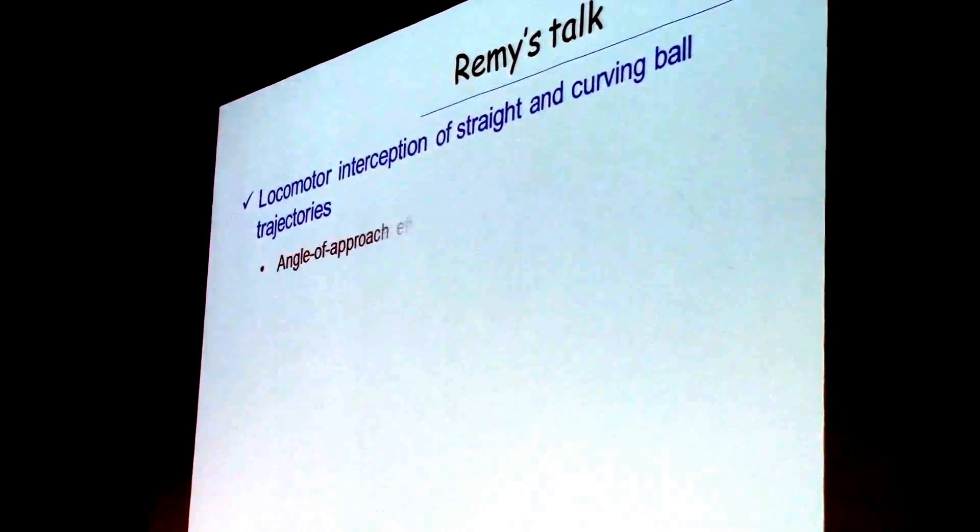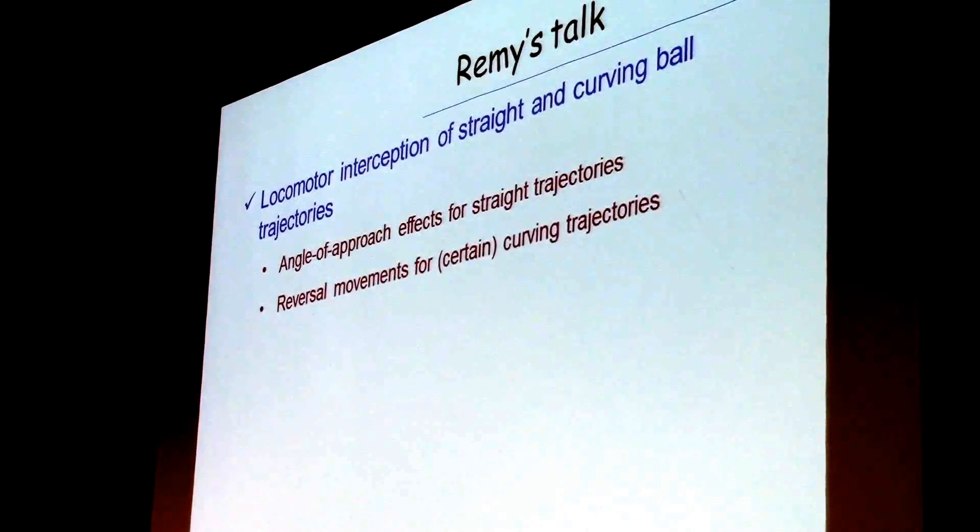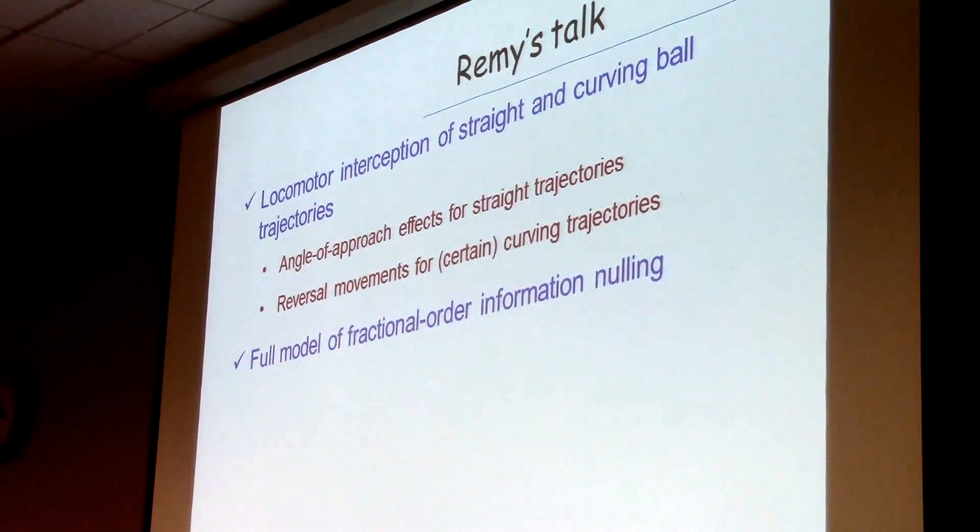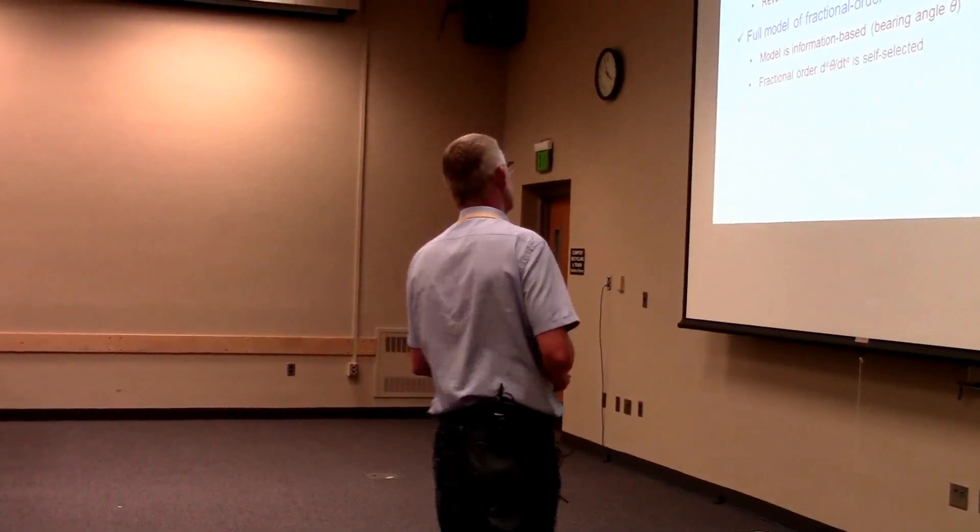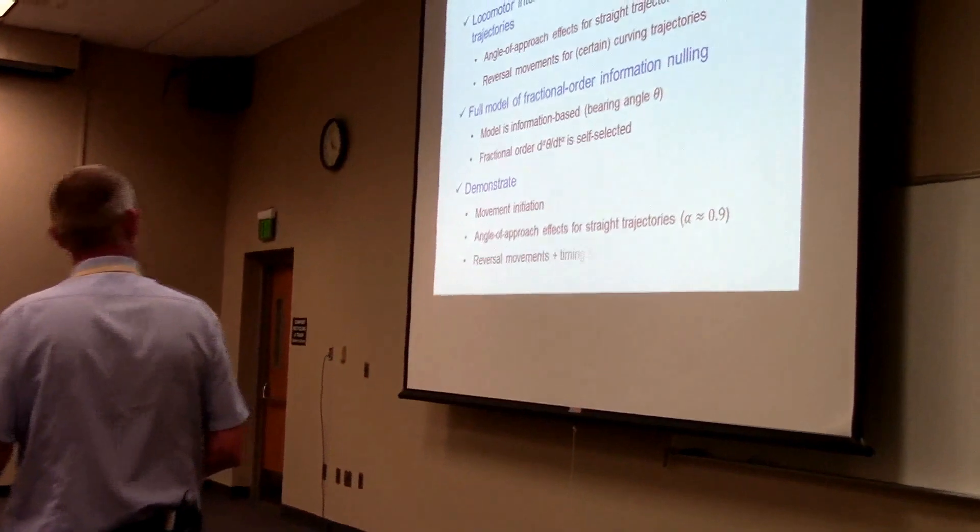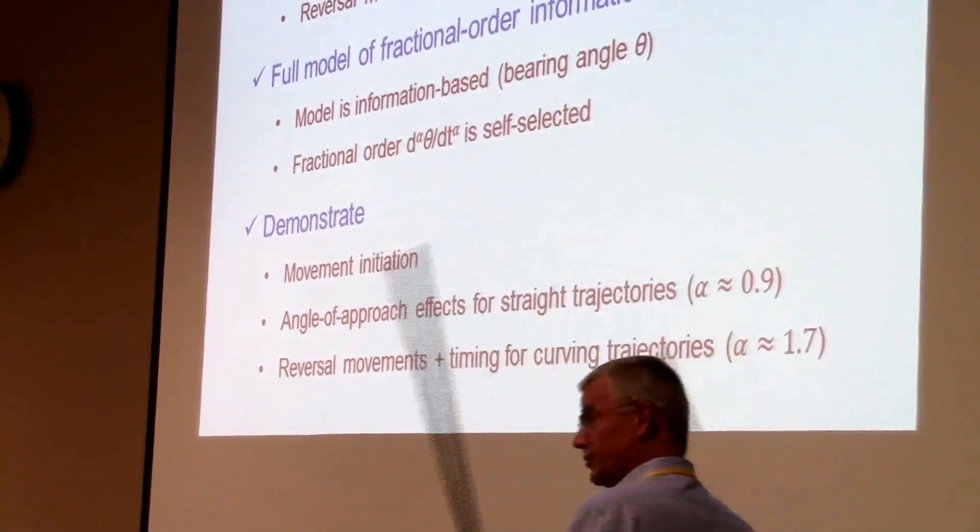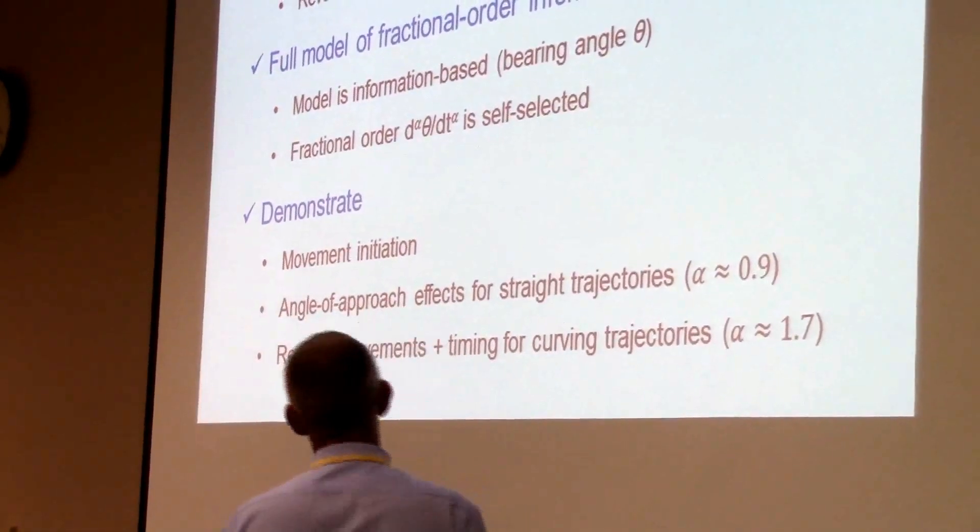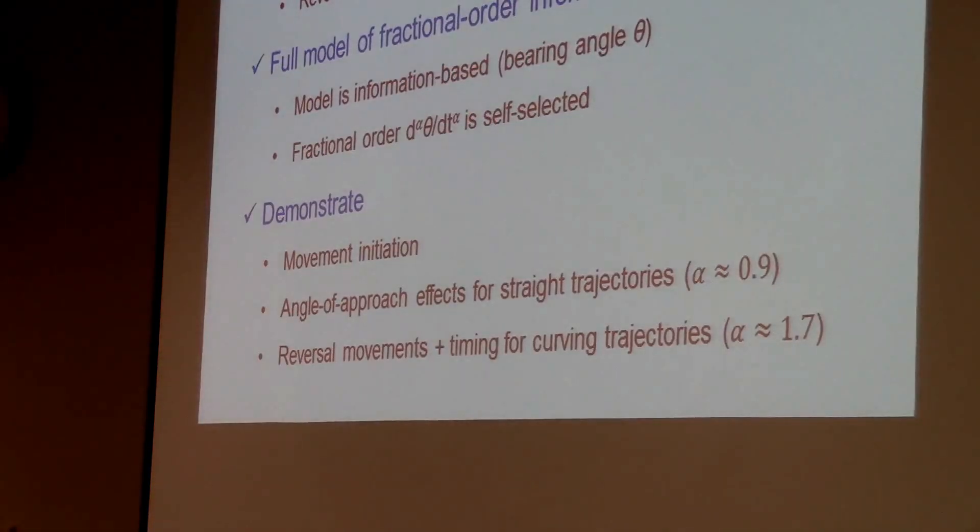Remy will show you locomotor interception of both straight and curving ball trajectories. He will show, for the first time, that there's actually angle of approach effects, also in locomotor interception. He will show you that there's a reversal movement for certain curving trajectories. He will use the full-fledged model, although we've tried to keep him from presenting all elements of it. So the model is information-based. It's based on bearing angle alpha. Fractional order derivative of that, which is self-selected. Variable over different trajectories. And so that will demonstrate the same logic. We capture the pattern of movement initiation. You get angle of approach effects for straight trajectories because alpha is smaller than one. And you get the reversal movements and the timing for curving trajectories. Because for curving trajectories, the alpha can go up to 1.7.